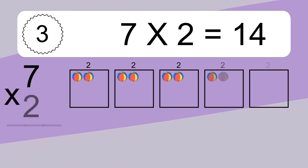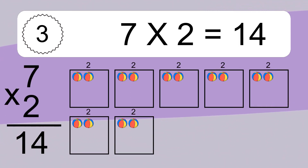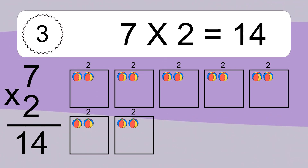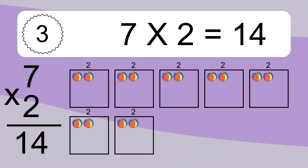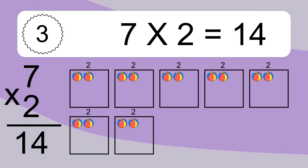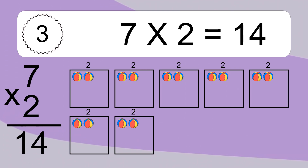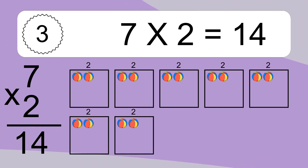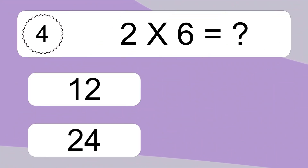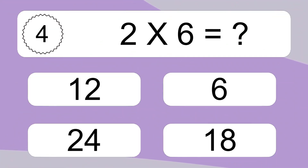7 times 2 equals what? 7 times 2 equals 14. We have 7 boxes, and each box has 2 colorful balls inside. If you count all the balls in all the boxes together, you will have 7 times 2 balls. This equals 14 balls.